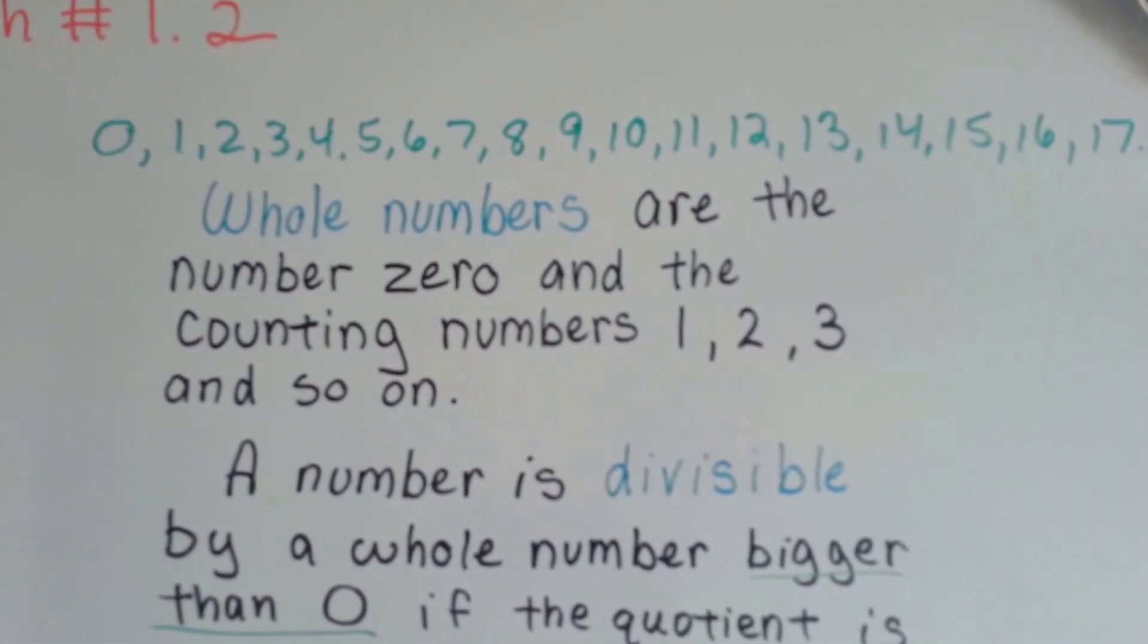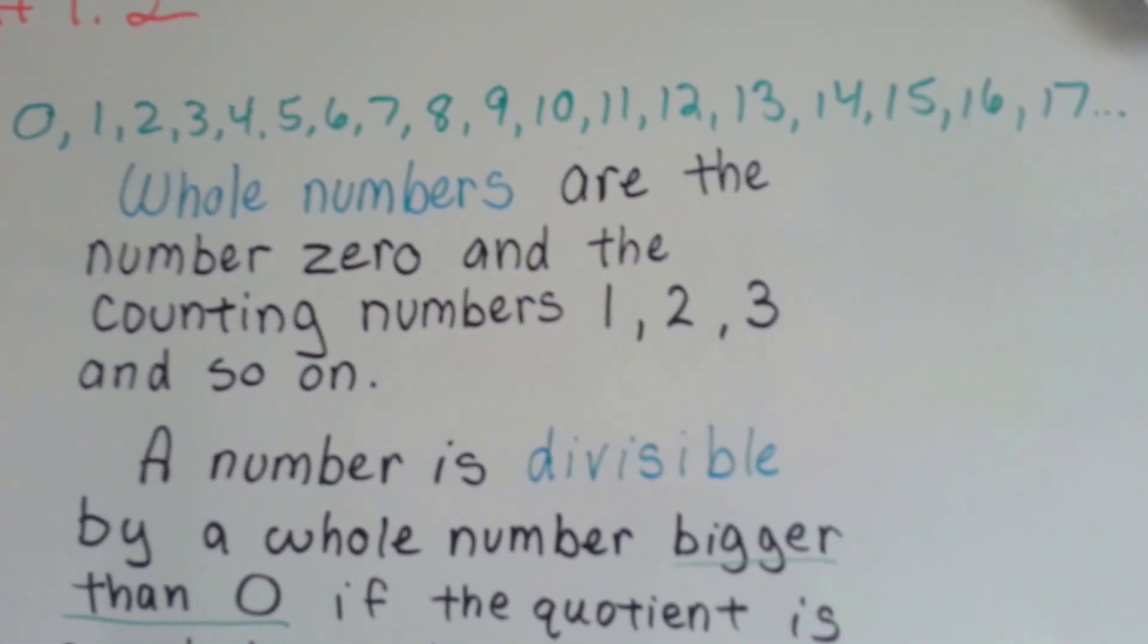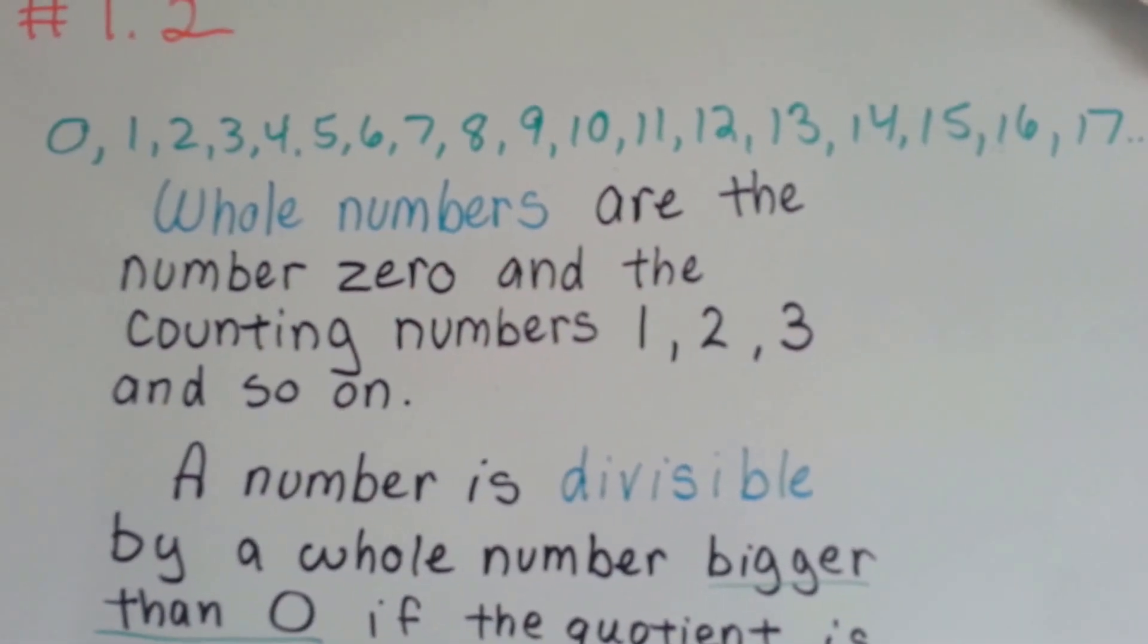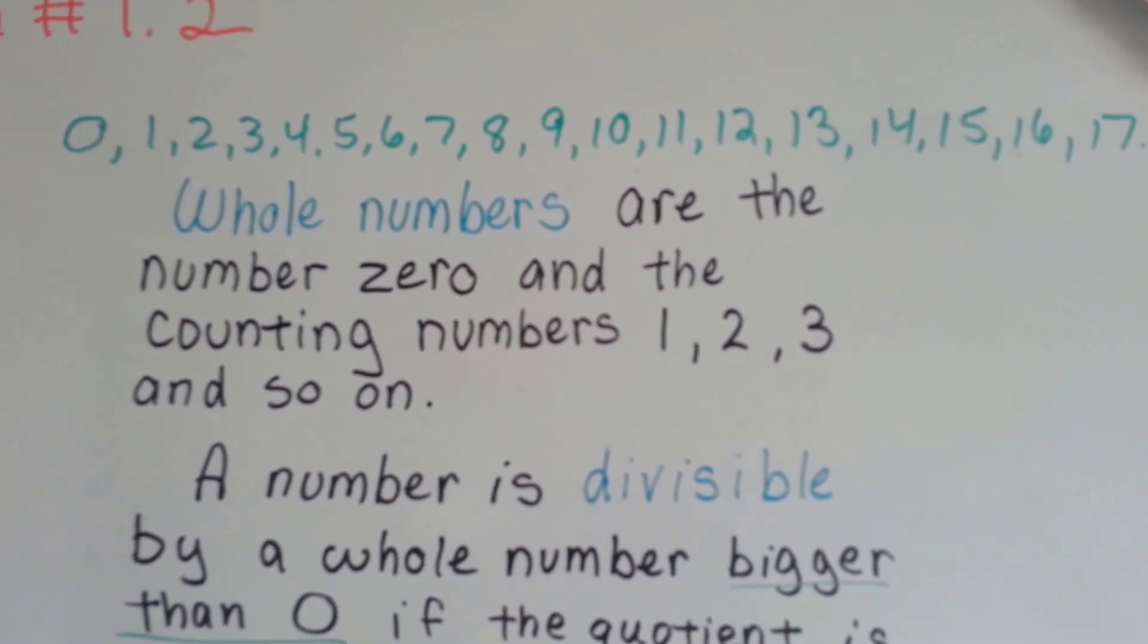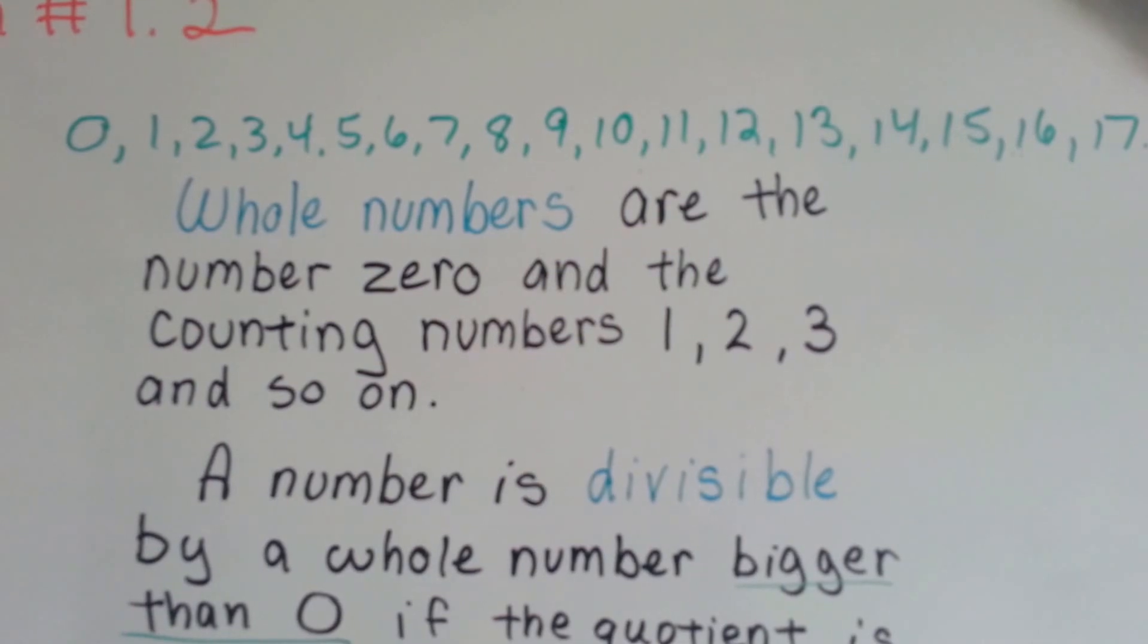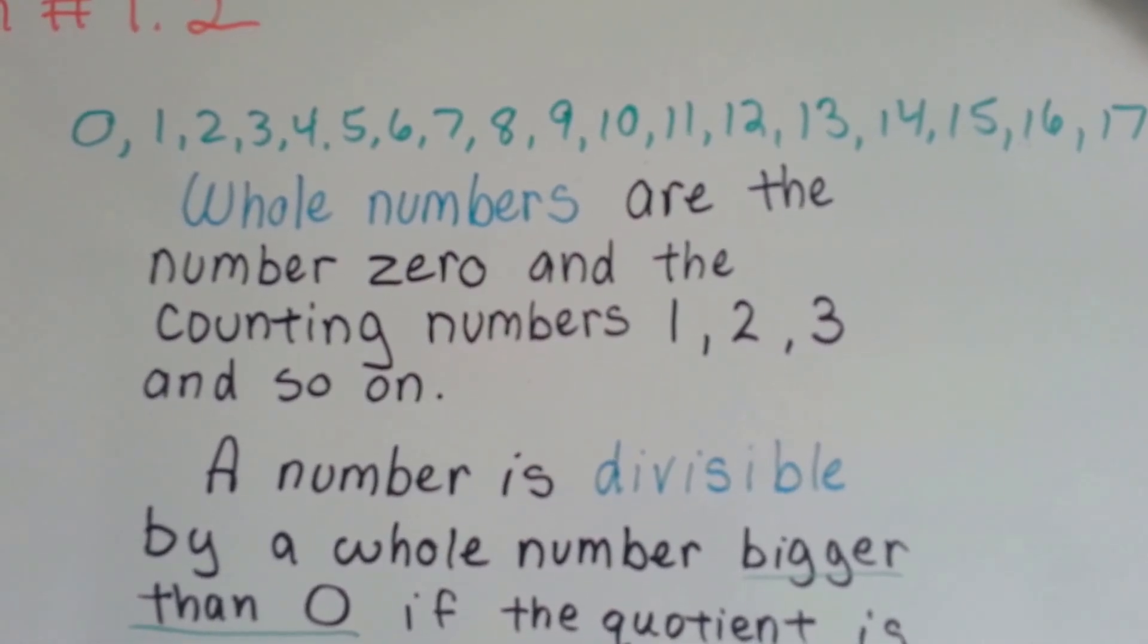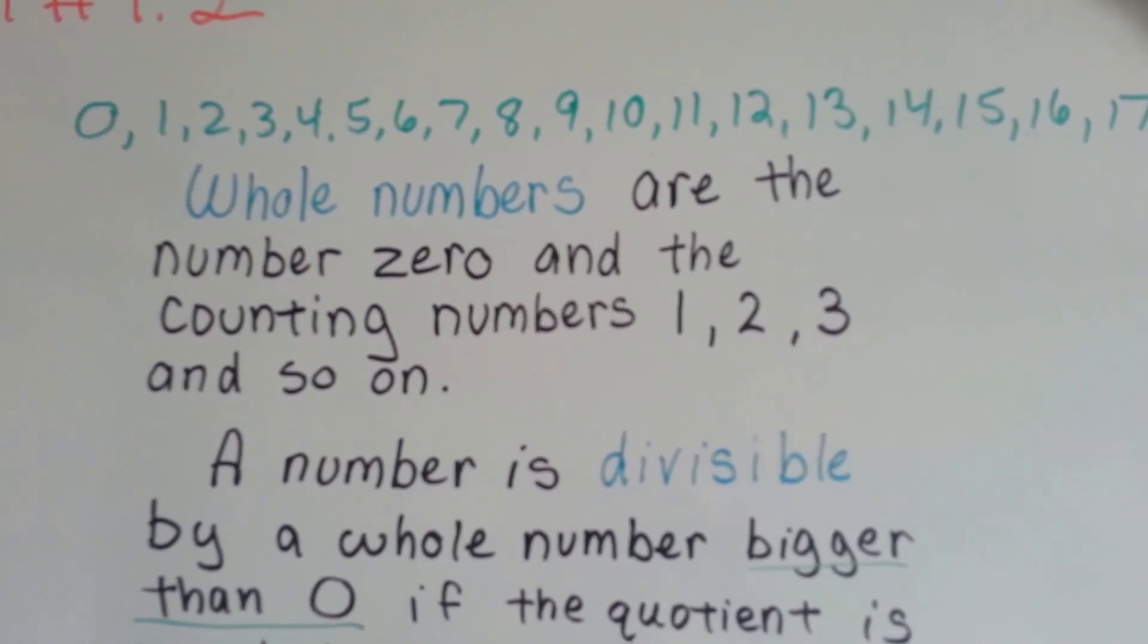0, 1, 2, 3, 4, 5, 6, 7, I can keep counting. Whole numbers are the number 0 and the counting numbers 1, 2, 3, 4, you know, keep counting.